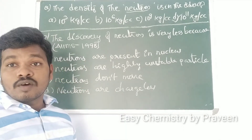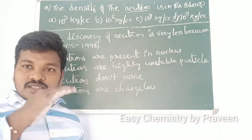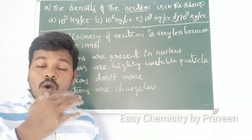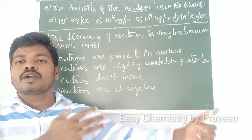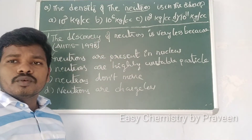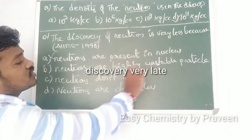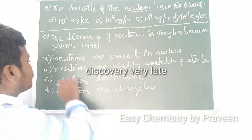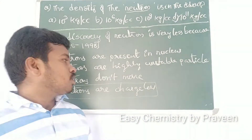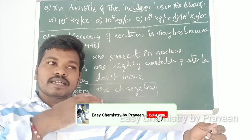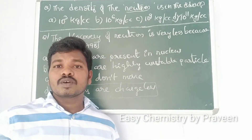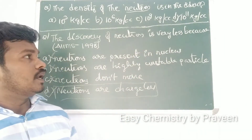This question was asked in AIMS 1998: the discovery of the neutron was very late because — options: neutrons are present in the nucleus; neutrons are highly unstable particles; neutrons do not move; neutrons are chargeless. The correct reason is that neutrons are chargeless. A chargeless particle will not be deflected in electrical or magnetic fields, which is why the discovery of the neutron came so late.